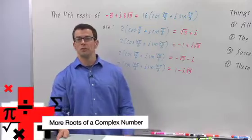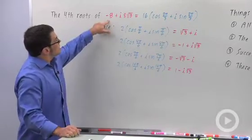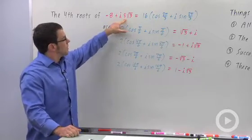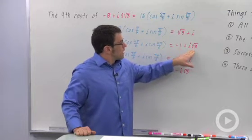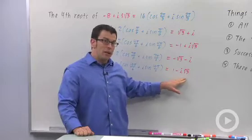Let's review some basic facts about the roots of a complex number, starting by looking at an example. The fourth roots of negative 8 plus i times 8 root 3 are root 3 plus i, minus 1 plus i root 3, minus root 3 minus i, and 1 minus i root 3.